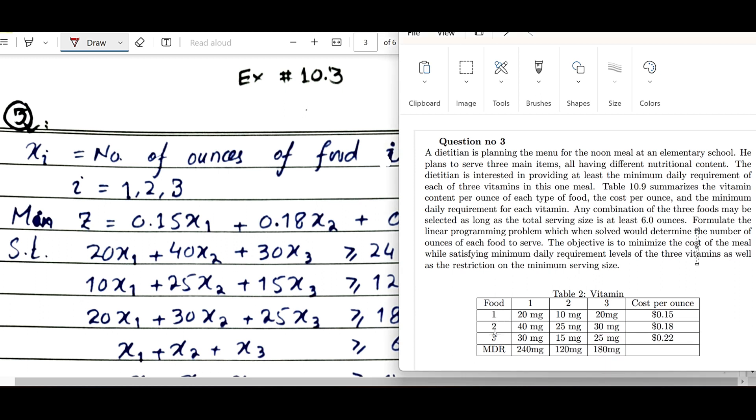So table is given, food one, two, and three. Three foods will be served. Each food contains vitamins one, two, and three. Food one contains how many grams of vitamins one, two, and three per ounce is given, and its cost is also given.